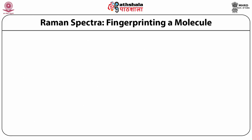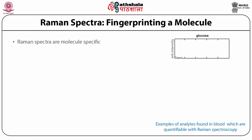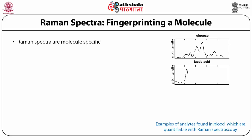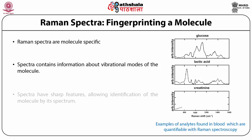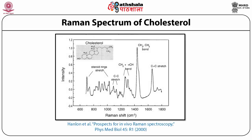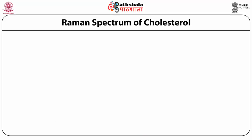The Raman spectra indicates the fingerprinting region of a molecule. This figure shows a Raman spectrum which is molecular specific — whenever you take Raman spectra, it is extremely molecule specific. The spectra contains information about the vibrational modes of the molecule and has sharp features allowing identification of the molecule by its spectrum. This spectra shows the Raman spectrum of the cholesterol molecule — it's a large molecule and very sharp peaks have been noticed.